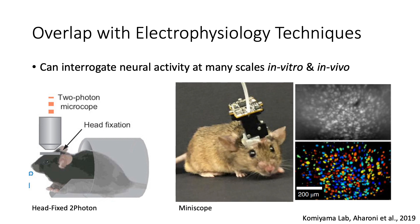In vivo experiments can be accomplished in one of two ways. Head-fixed two-photon calcium imaging gives you high-resolution data from a large population of neurons, but the animal is not free to behave naturally. Using the recently invented mini-scope preparation, scientists can accomplish calcium imaging in freely behaving animals.